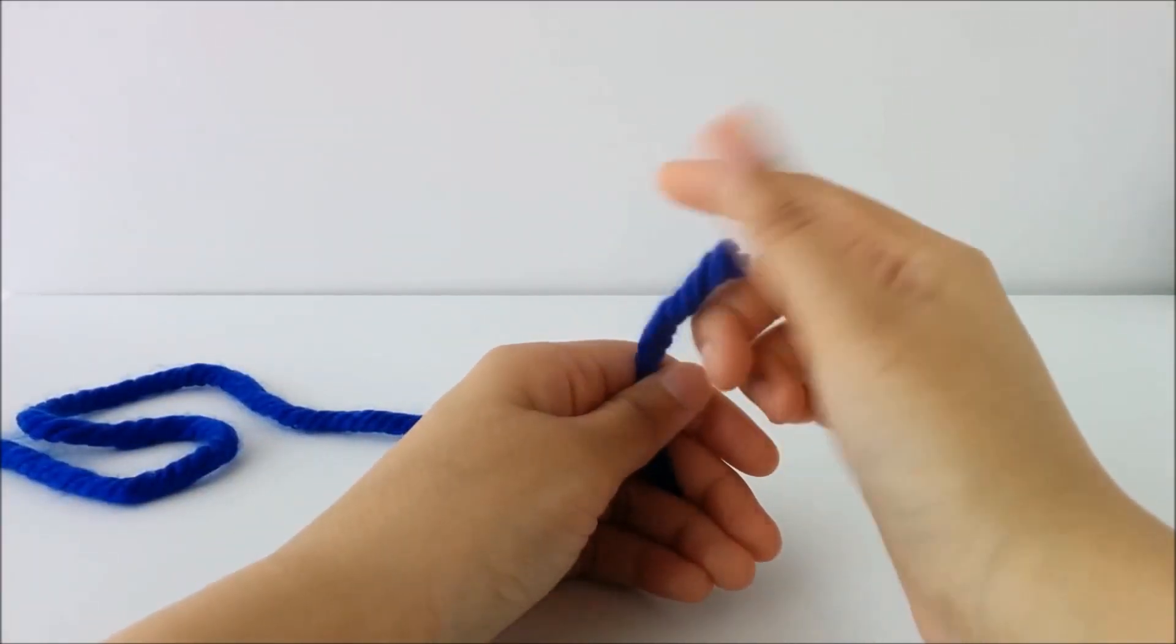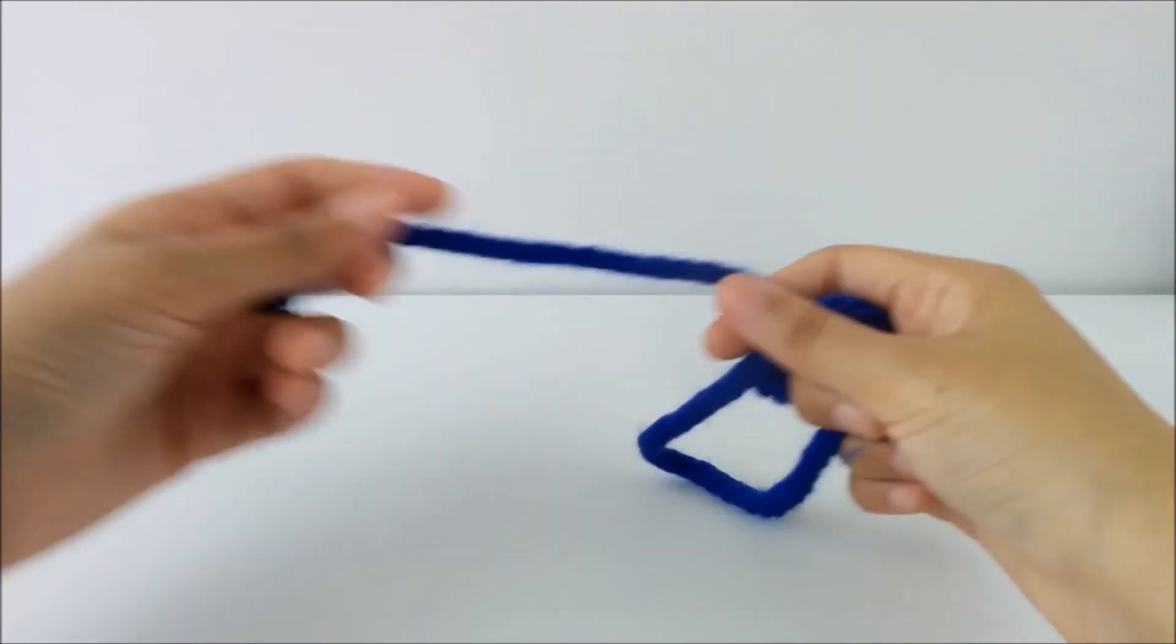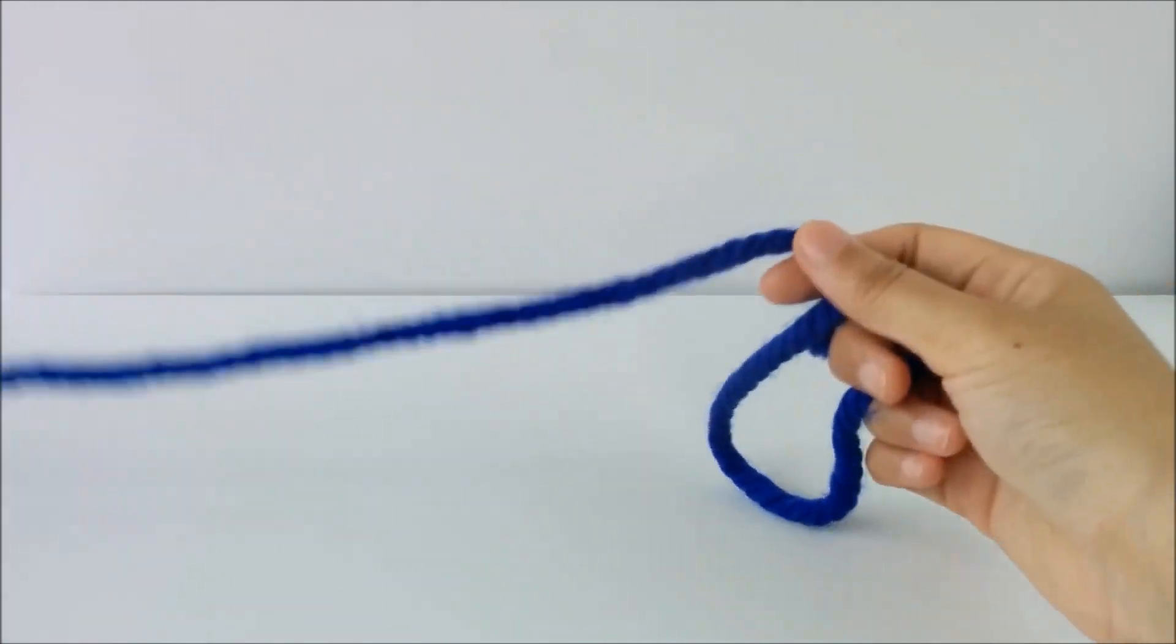This end, the end of your yarn here, is called a tail yarn. It's called the tail end. And then the rest of it, whatever is coming from the ball and whatever you're working with, is called the working yarn.